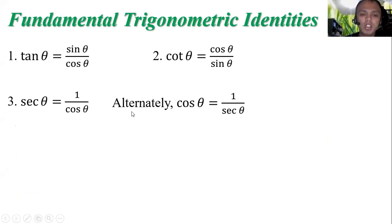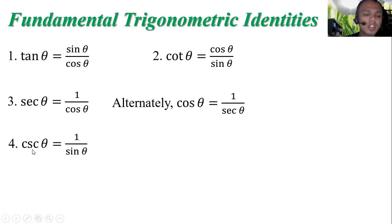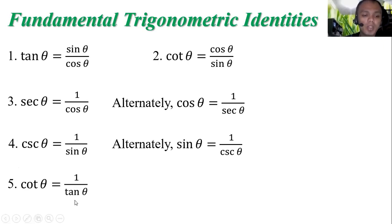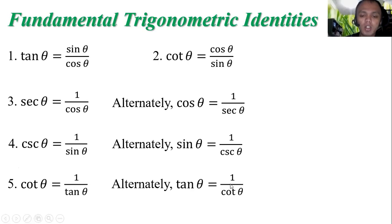An alternate version of this identity is cosine theta equal to one over secant theta. Cosecant theta is equal to one over sine theta, and alternately sine theta is equal to one over cosecant theta. Cotangent theta is equal to one over tangent theta, and alternately tangent theta is equal to one over cotangent theta.